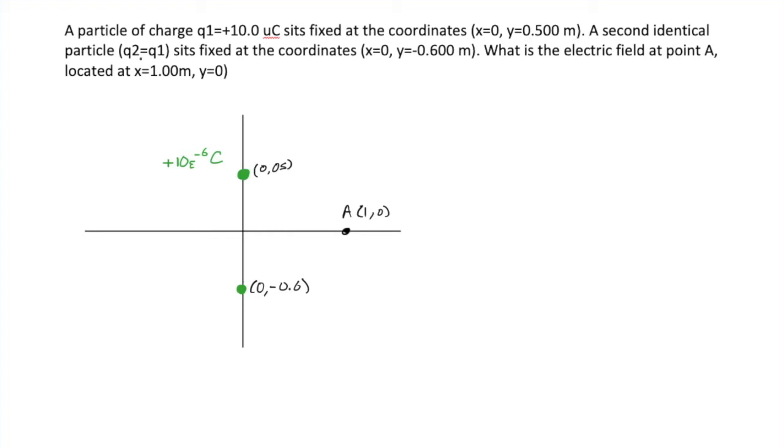A second identical particle, q2 is equal to q1, sits fixed at the coordinates x equals 0, y equals negative 0.6 meters. What is the electric field at point A located at x equals 1, y equals 0?